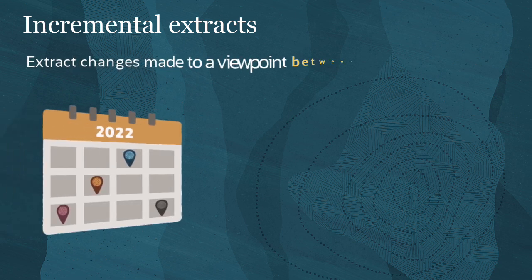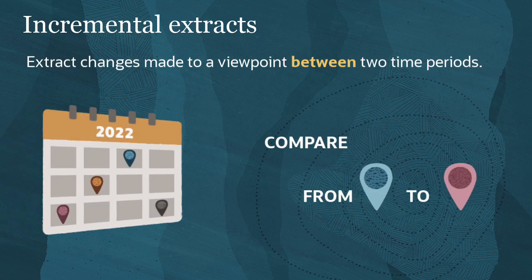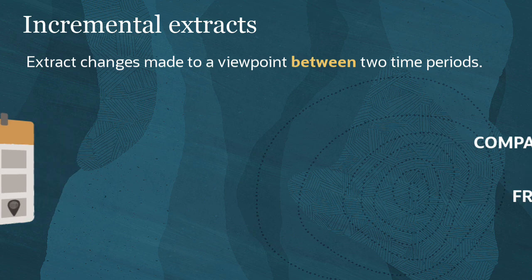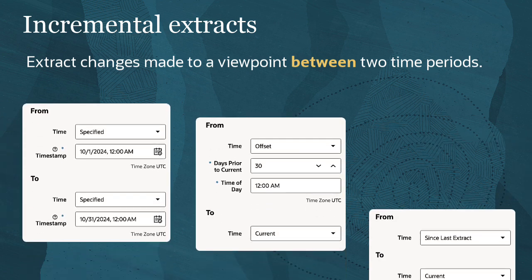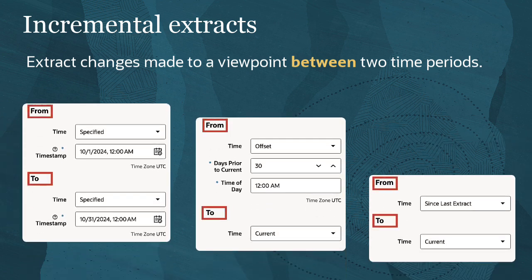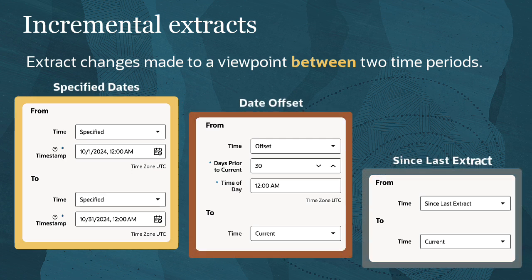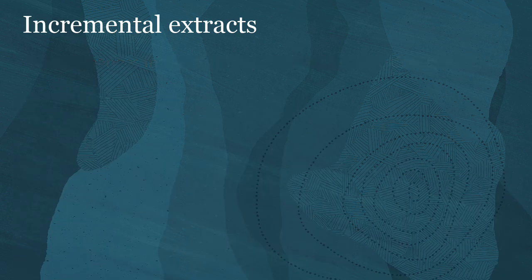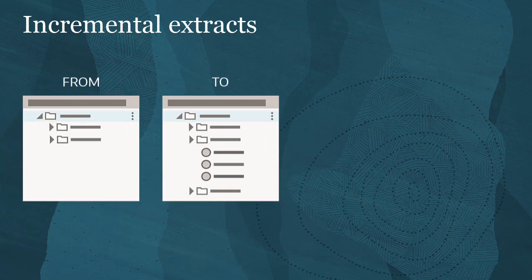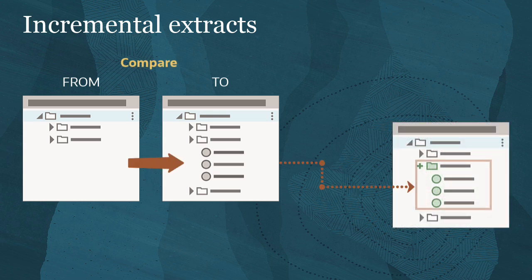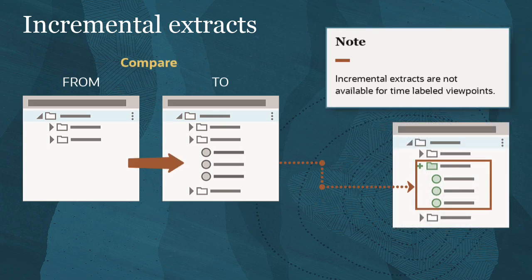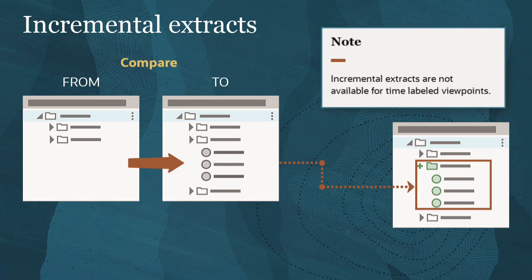Incremental extracts enable you to extract changes made to a viewpoint between two time periods. When you create the extract, you designate from and to time periods. You can specify from and to dates, a date offset, or you can extract all changes made since the last time an extract was run. When you run the extract, the system compares viewpoint versions for the two periods and outputs the incremental differences.